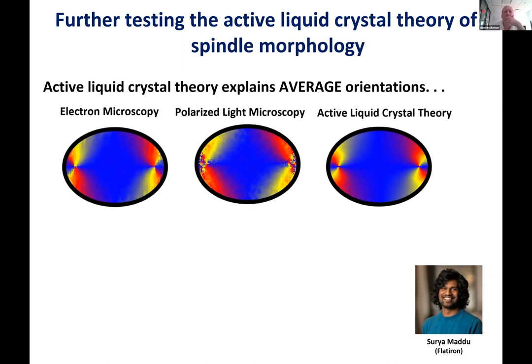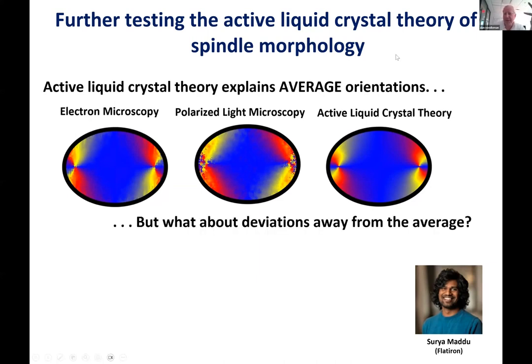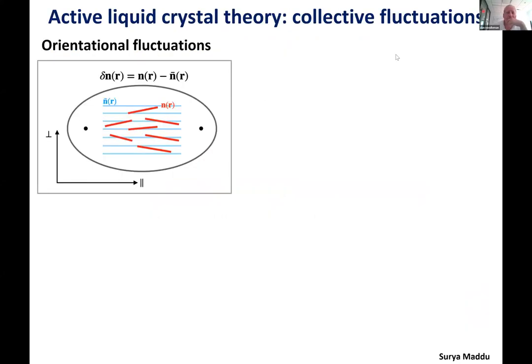We were very excited by that, but wanted to further test this active liquid crystal theory. That's what Surya Amada, a postdoc at Flatiron, has done. The active liquid crystal theory can explain the average orientation of microtubules throughout the spindle — but what about deviations away from the average? If you look at the spindle, each given microtubule deviates from the mean orientation at every location, and an active liquid crystal theory can predict what those deviations should look like.